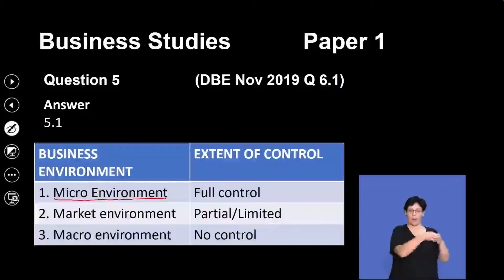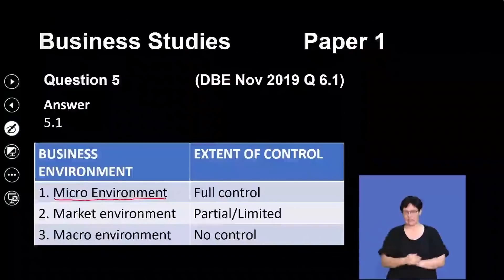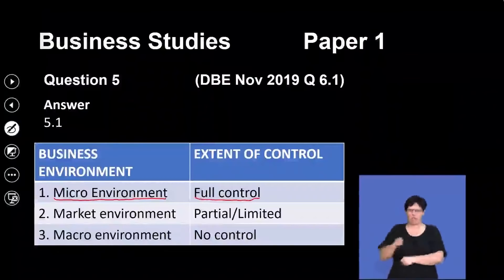The question was asking about the three different business environments and the control of each. The first environment is the micro environment — the business itself. Every business is the micro environment, whether you're a farmer, a car manufacturer or a bank. In the micro environment, the business has full control. We determine our mission and vision, our strategy, who we employ, what the organisational culture is. It doesn't mean that because we have full control we're going to be successful, but we can decide what we want to sell and what we have to offer. No one from the outside can tell us what we should be selling.